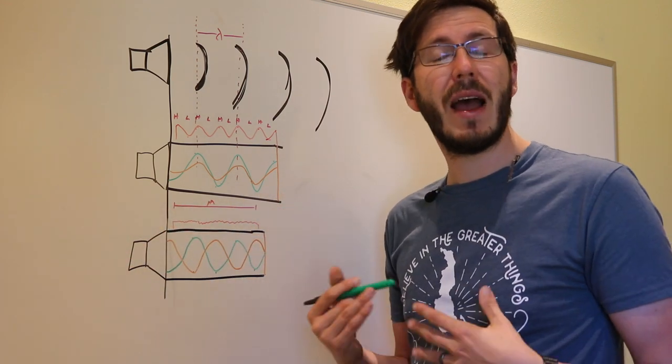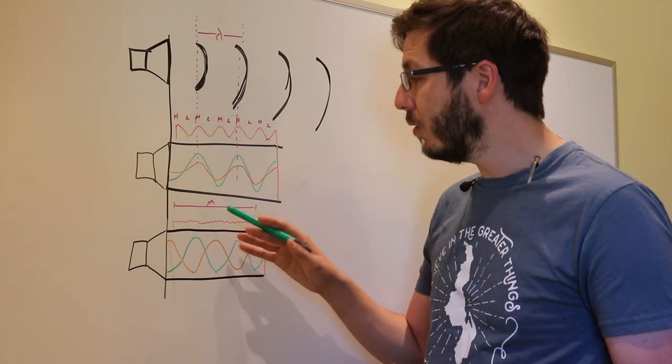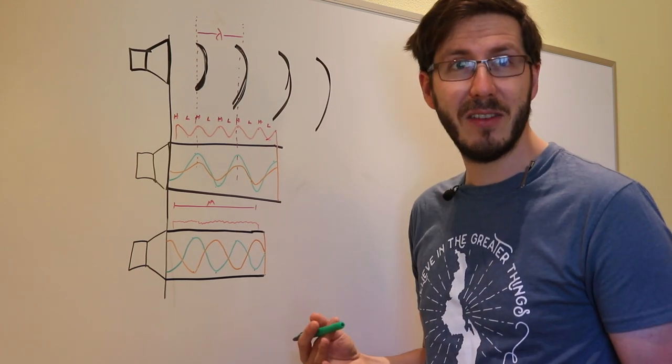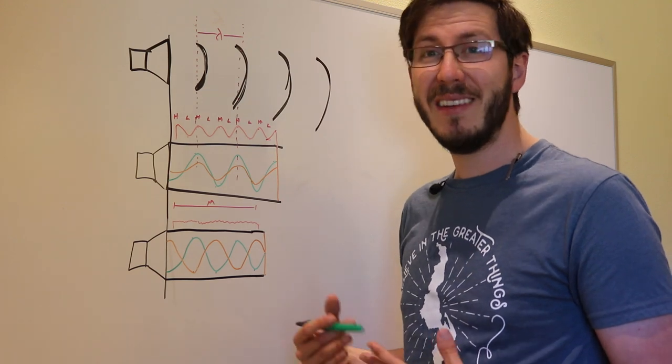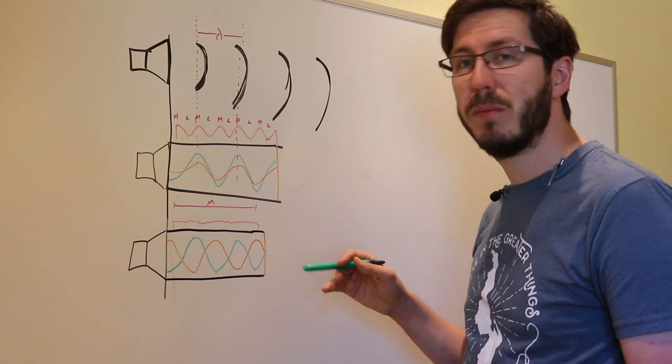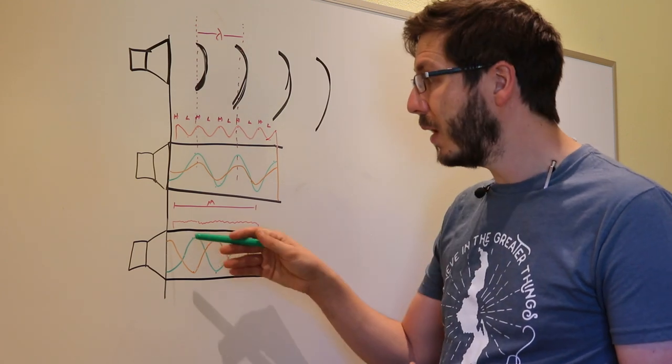So if we look at this slightly shorter tube, we get the antithesis of constructive interference: destructive interference, where it effectively cancels all of our sound pressure waves out and we get very little variation.